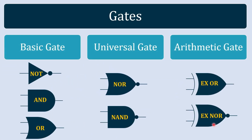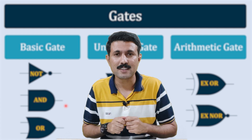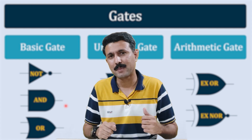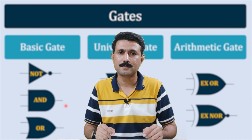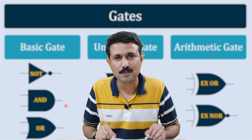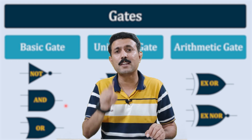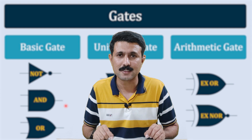We have now understood the universal gates using their truth tables and basic constructional circuits. In the next video, we are going to understand the arithmetic gates. There are many animated videos on digital electronics available in the playlist.